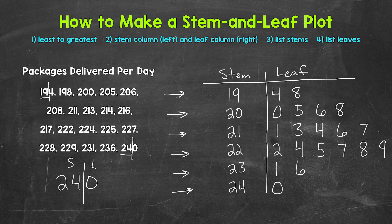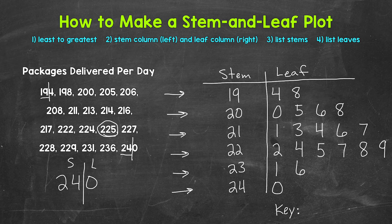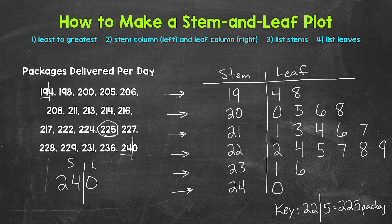Now what we can do is make a key, so that anyone looking at this will know exactly what the stems and leaves represent and how to read the plot. All we need to do is take an example from the stem and leaf plot. So for example, let's use 225 — a stem of 22 and a leaf of 5 equals 225 packages. That key shows that the hundreds and tens digits are the stems, and the ones digits are the leaves.